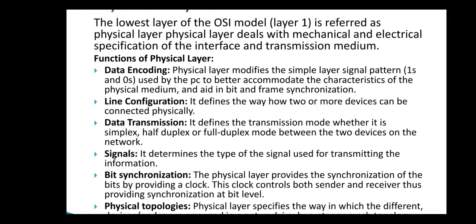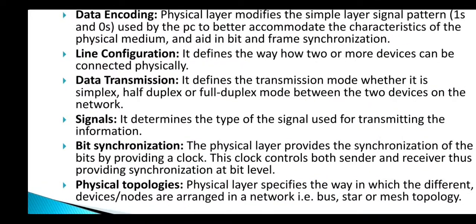Line configuration defines how two or more devices can be connected physically. Data transmission defines the transmission mode — whether it is simplex, half duplex, or full duplex between two devices. Signals: it determines the type of signal used for transmitting information. Bit synchronization: the physical layer provides synchronization of bits by providing a clock that controls both sender and receiver, providing synchronization at the bit level. Physical topologies: the physical layer specifies how different devices or nodes are arranged in the network — such as bus, star, or mesh topology.